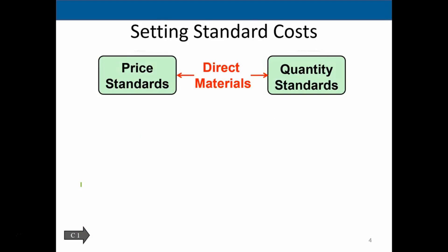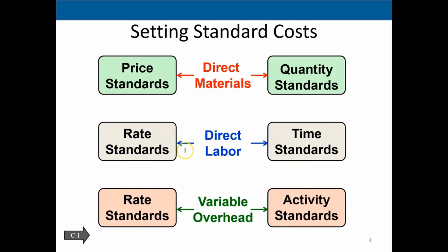When setting standard costs for direct materials, direct labor, and variable overhead, there are two components for direct materials: the price standard and the quantity standard. If a variance occurs, we ask whether we paid too much for the material or whether we used it inefficiently. Similarly for labor, we have a rate standard and a standard time. We need to come up with an average expected rate so we can compare actual cost per hour versus standard hours to produce something.